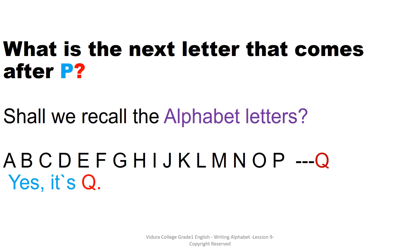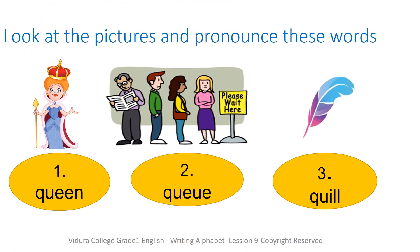Sharan, can you tell me what is the next letter that comes after P? Shall we recall the alphabet letters? The first letter is A, B, C, D, E, F, G, H, I, J, K, L, M, N, O, P. And what is the next letter after P? It's Q. Yes, it's Q.